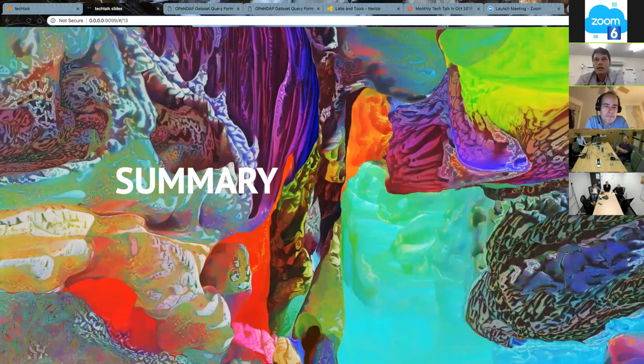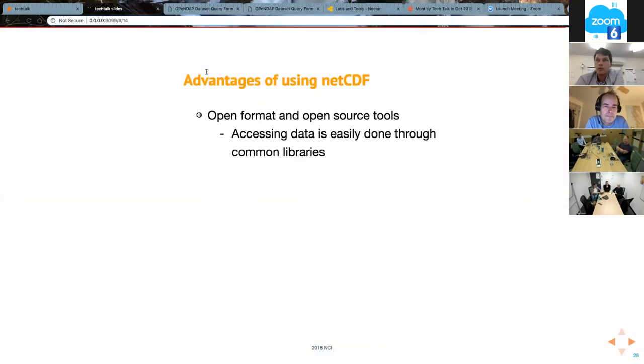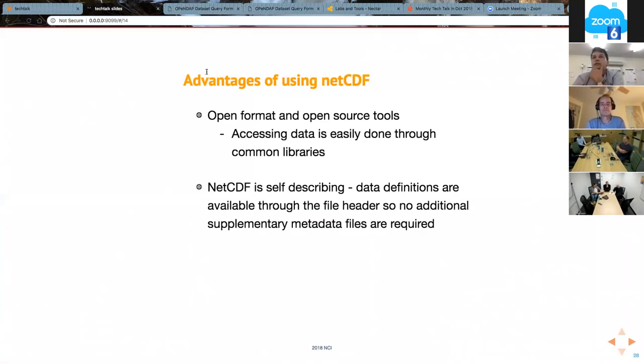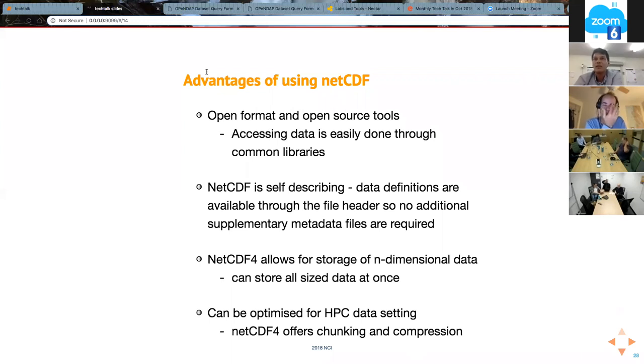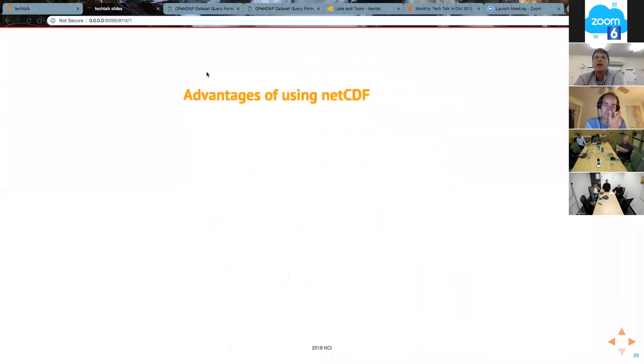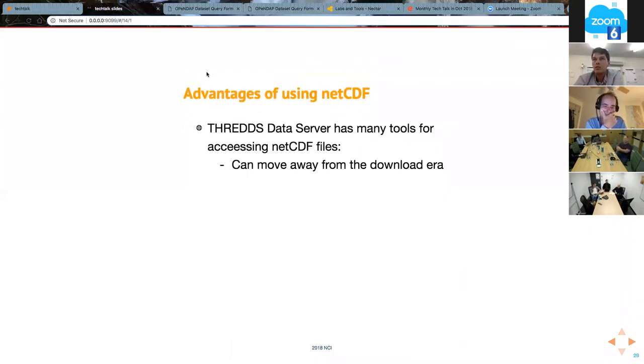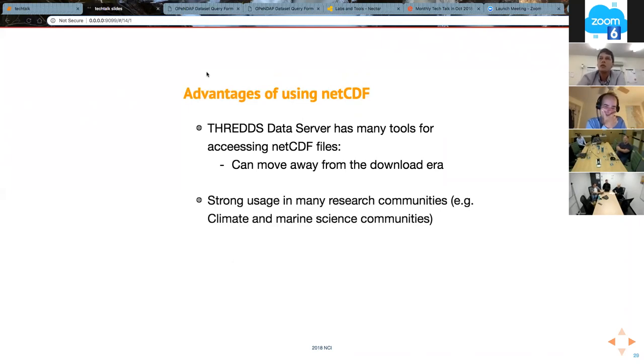The advantages of using NetCDF. It's an open format and open source tools. Accessing data is easily done through common libraries. It's self describing, so you don't need supplementary metadata files. NetCDF4 allows storage of n-dimensional data. It can store all size data at once. It can be optimized for HPC data settings, so it offers chunking and compression options. We have the THREDDS data server, which gives you many tools for accessing NetCDF files, so we can move away from the download era.